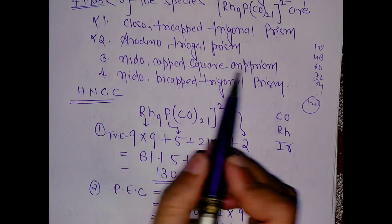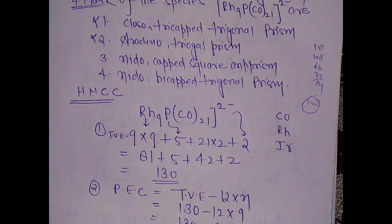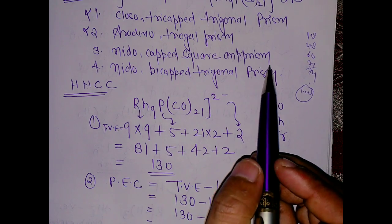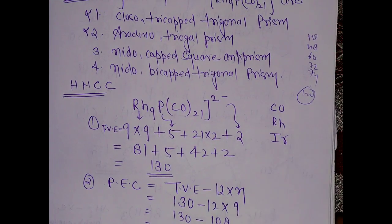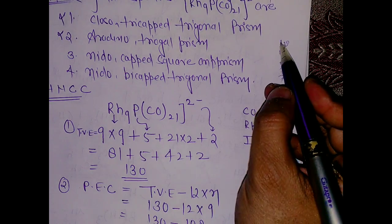In the options, if you look, we have nido in option 3 as well as option 4. So these two options get canceled out. We are left with these two options. Now the most important thing: how to calculate the geometry.